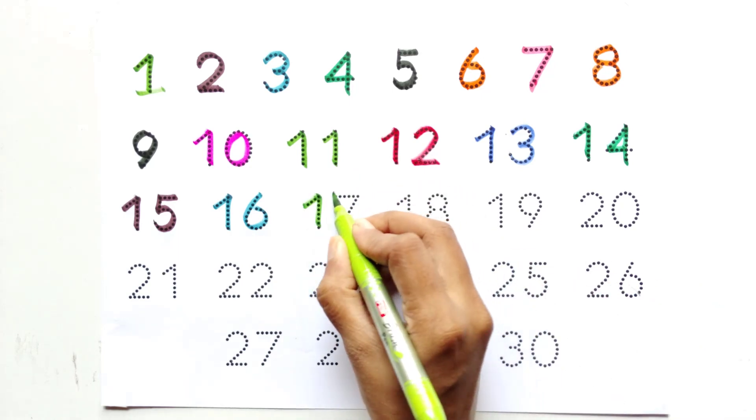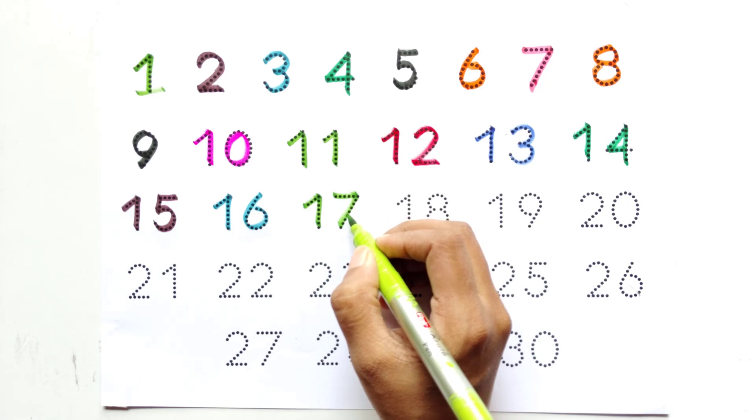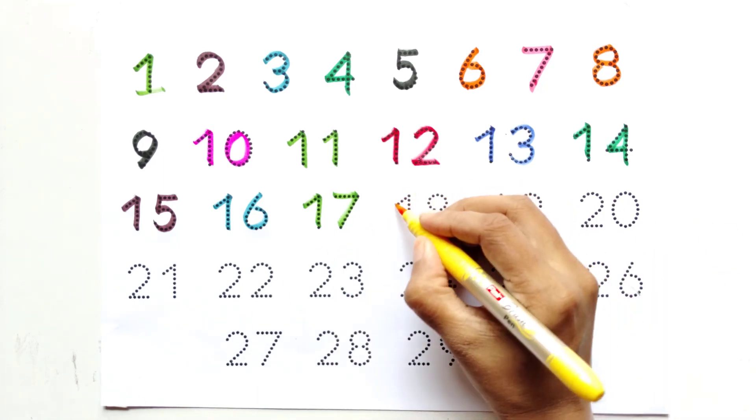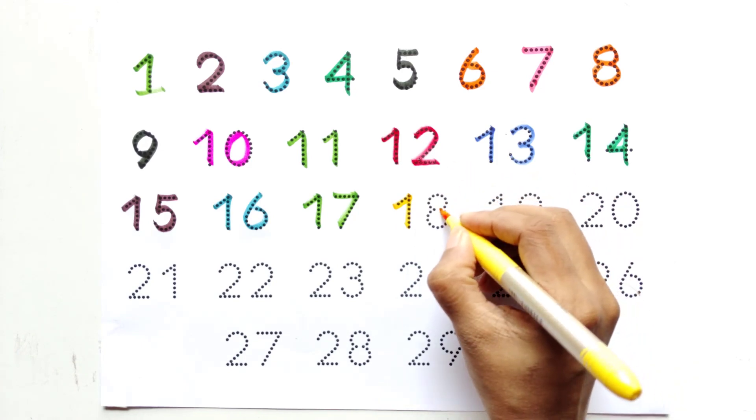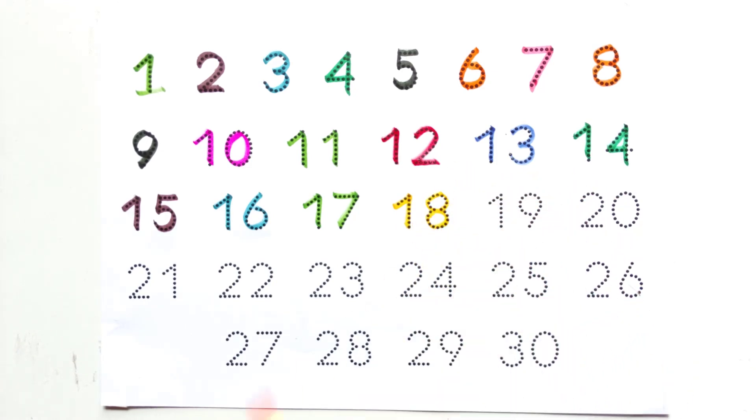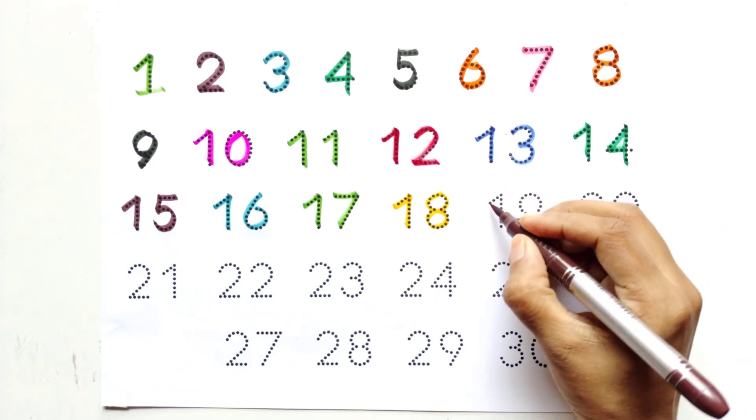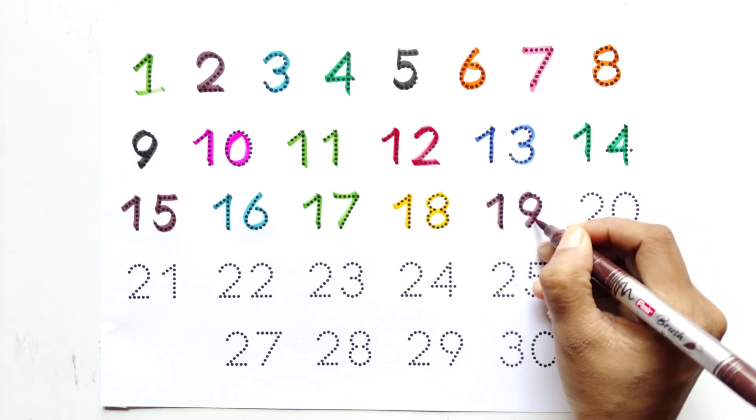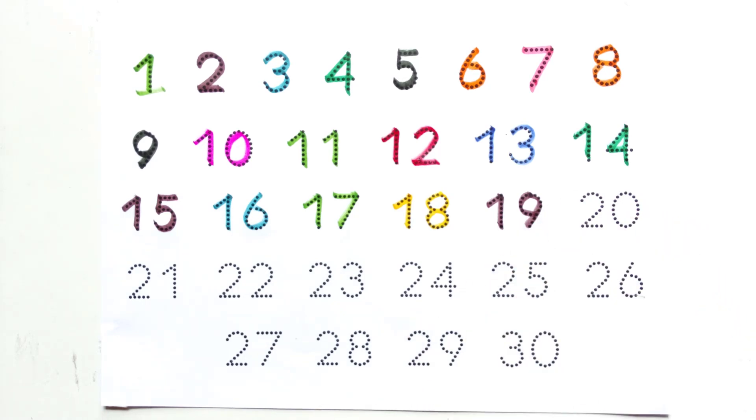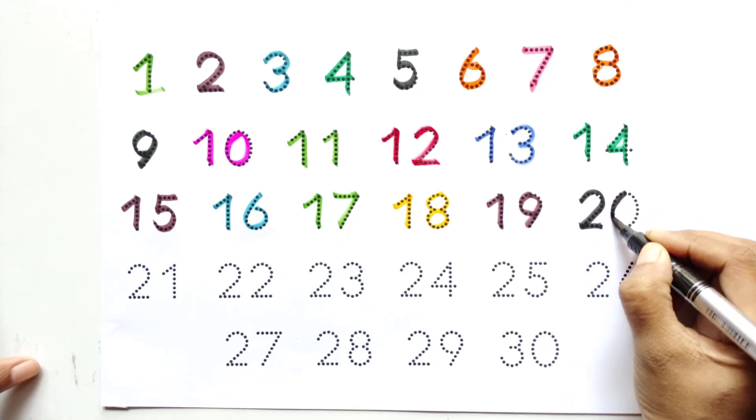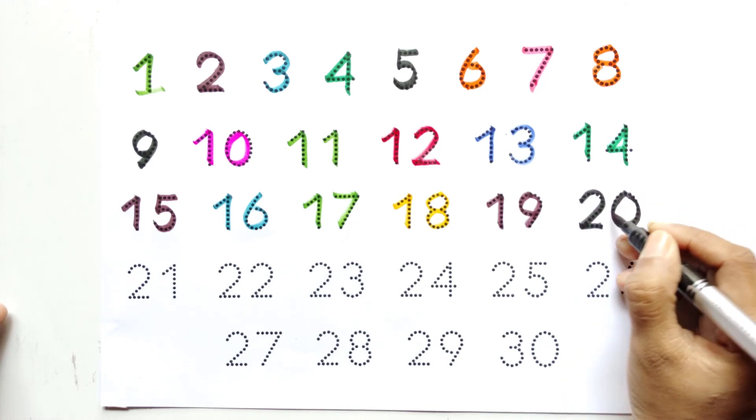One and six, sixteen. One and seven, seventeen. One and nine, nineteen. Two and zero, twenty.